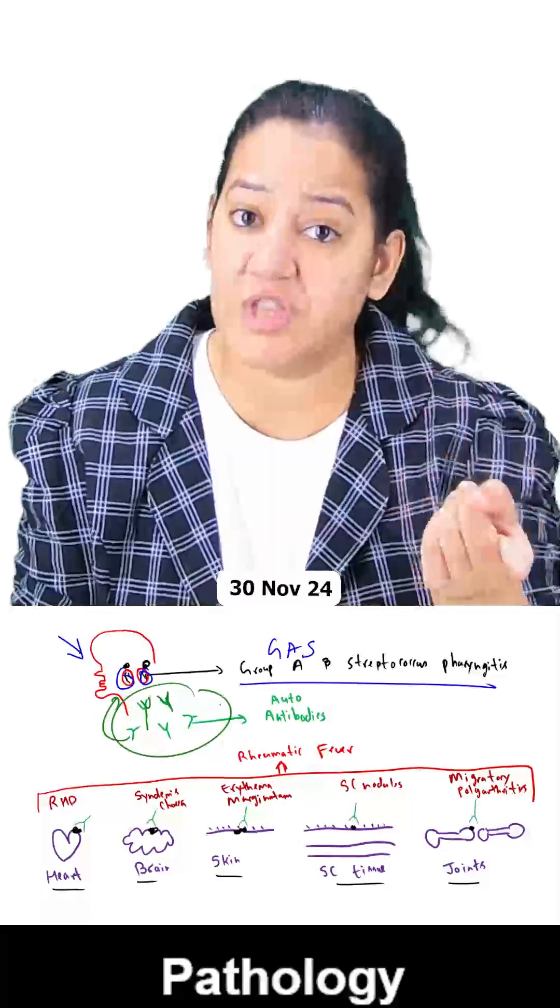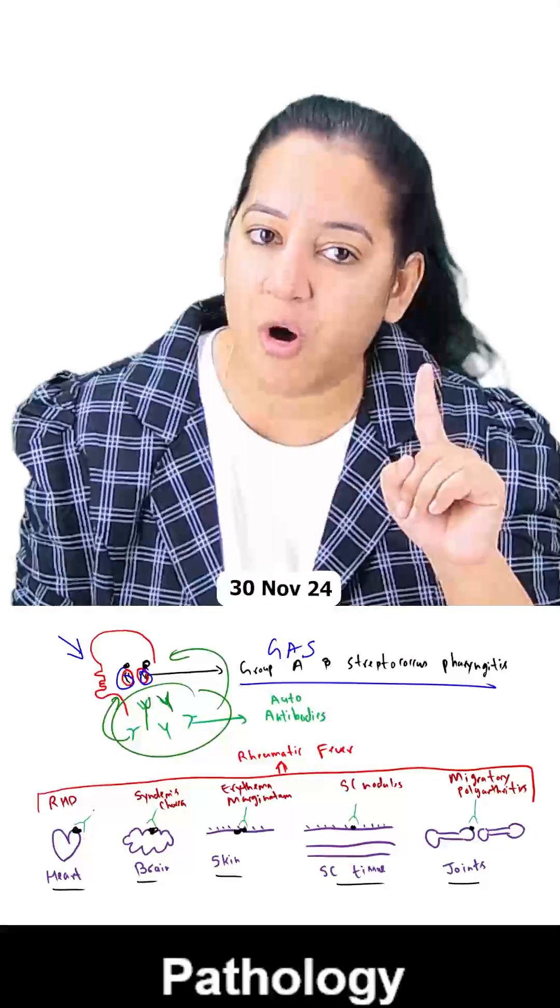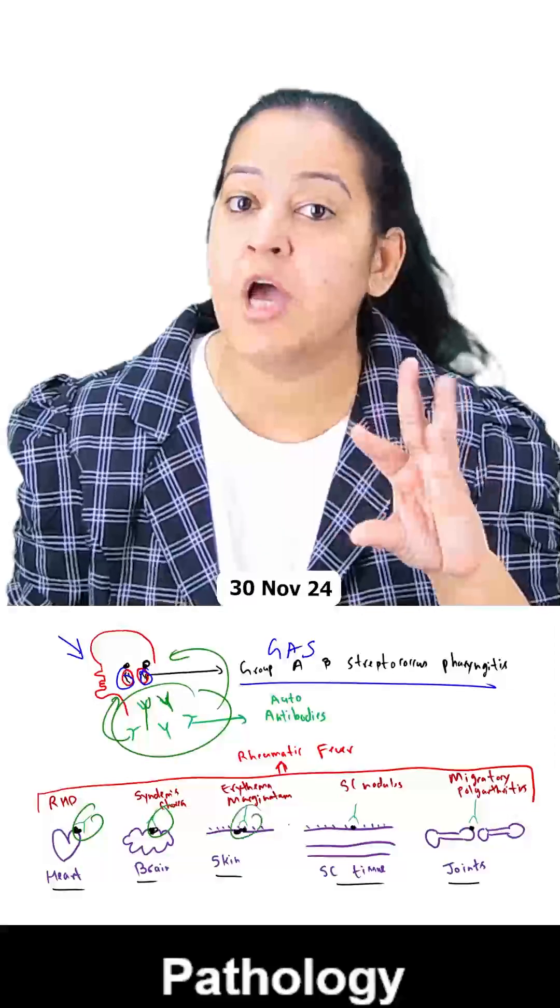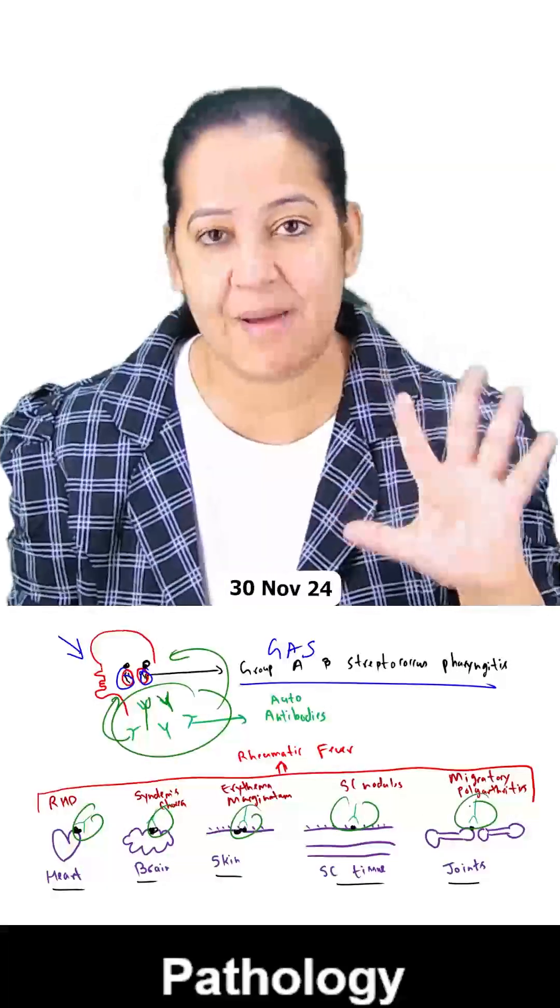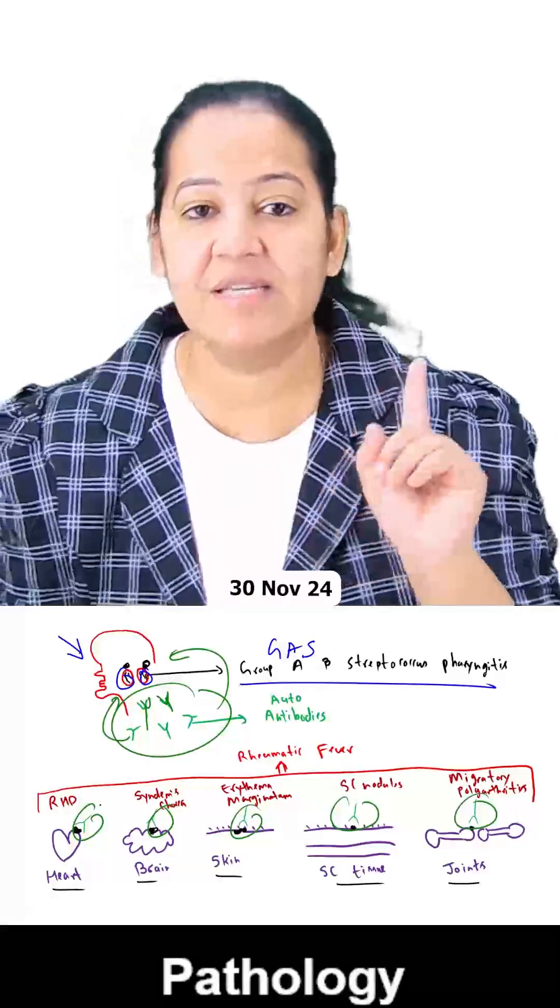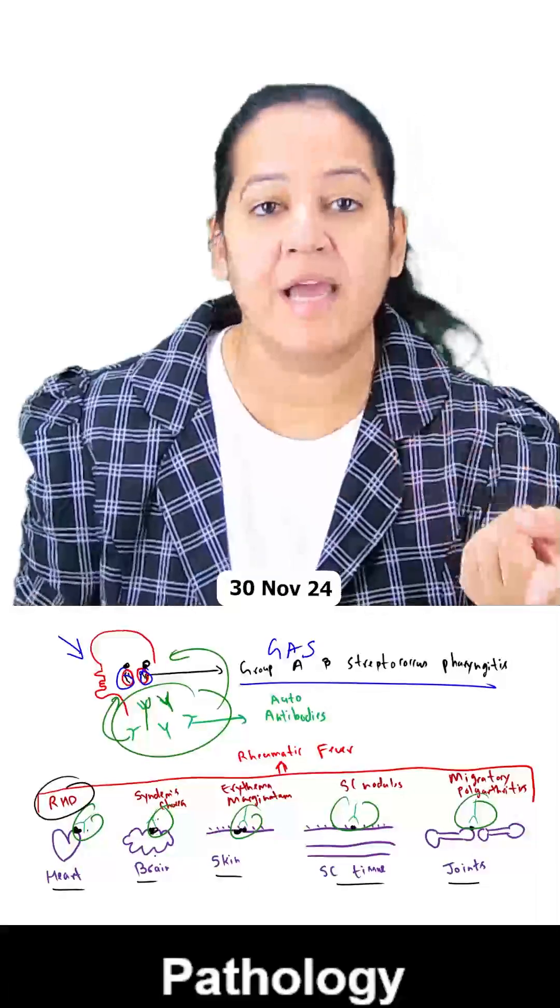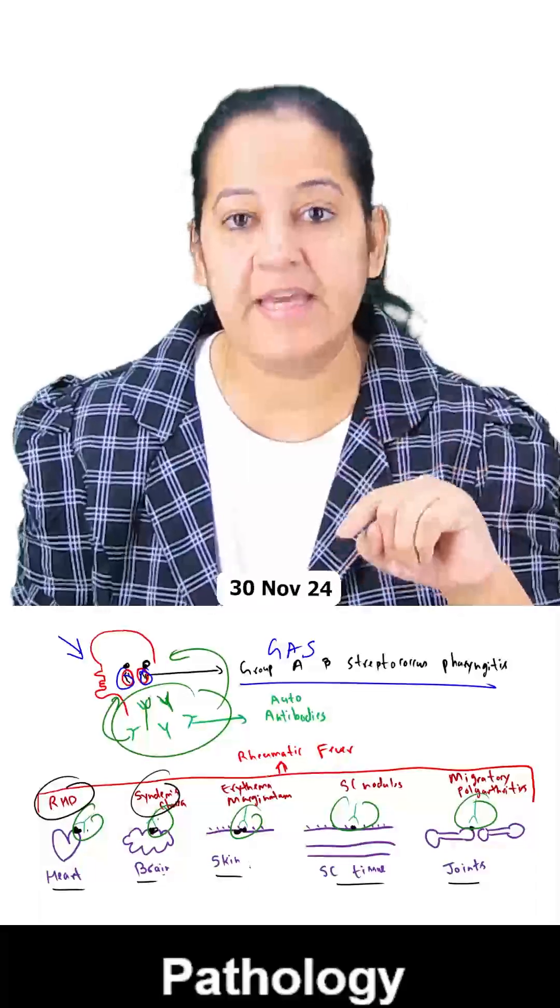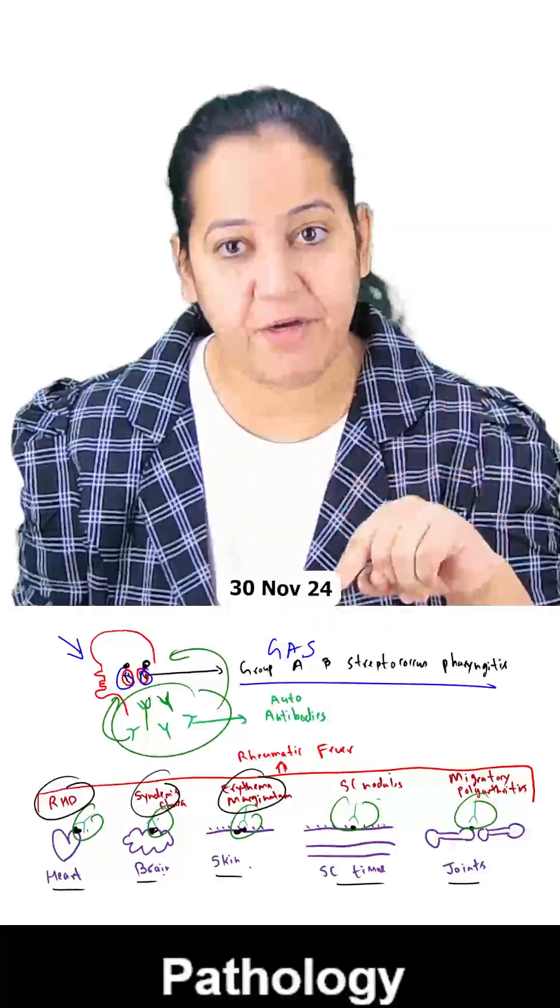These antibodies which are actually formed for the bacteria will cross-react with these five organs, causing five diseases and damaging the five organs. The five diseases are: in the heart it's carditis, in the brain it's chorea, in the skin it's erythema marginatum, in the subcutaneous tissue it's nodule, and in the joints it's migratory polyarthritis.